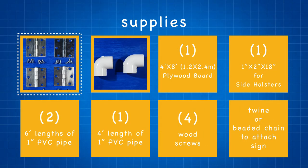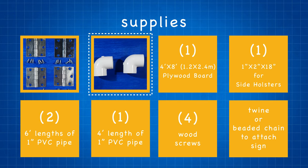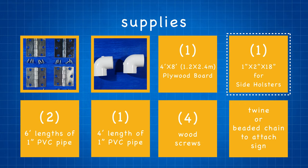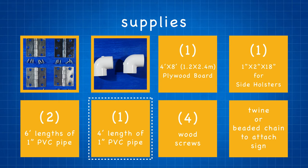Supplies to build the stand include four hinges with screws, two PVC one-inch elbows, one four by eight plywood board, one one by two piece of wood that's 18 inches long for the sign holsters, two six-foot lengths of one-inch PVC pipe, one four-foot length of one-inch PVC pipe, and four wood screws.